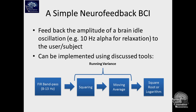Then you take the moving average of the squared signal — that's the moving average of squares, basically the sum of squares. This implements what you could call running variance: you calculate the variance of the signal in a moving window. Variance is the average of the second-order moments, which assumes the signal is zero mean. That's already guaranteed by the band-pass filter, since you removed everything lower than 8 hertz. So you have running variance.